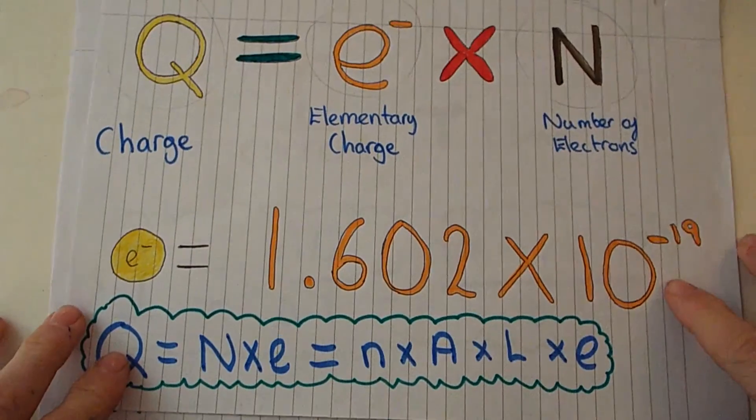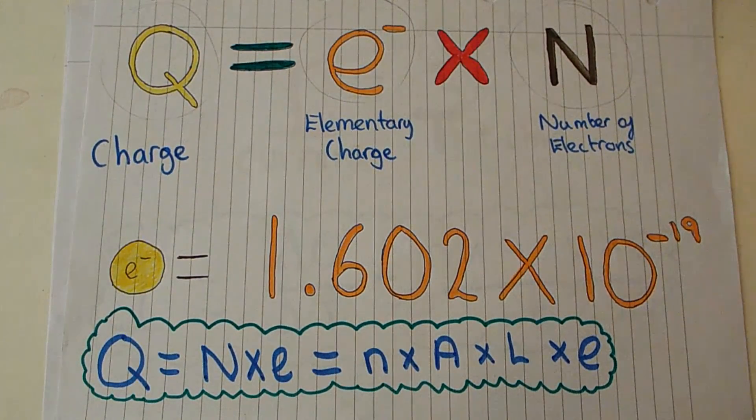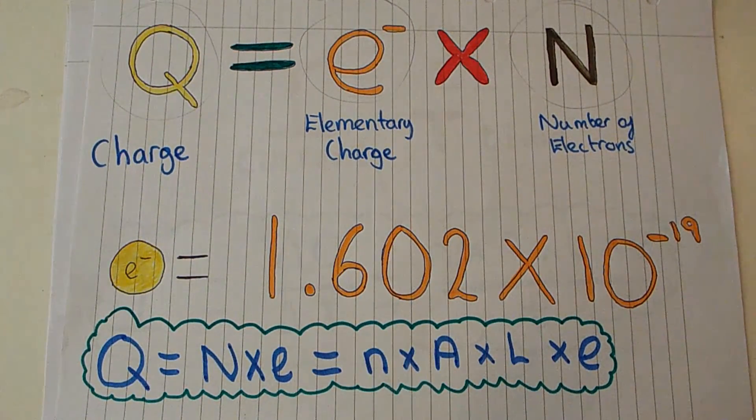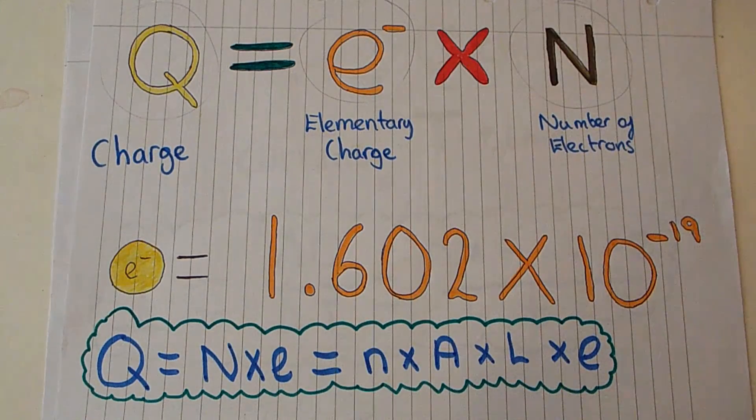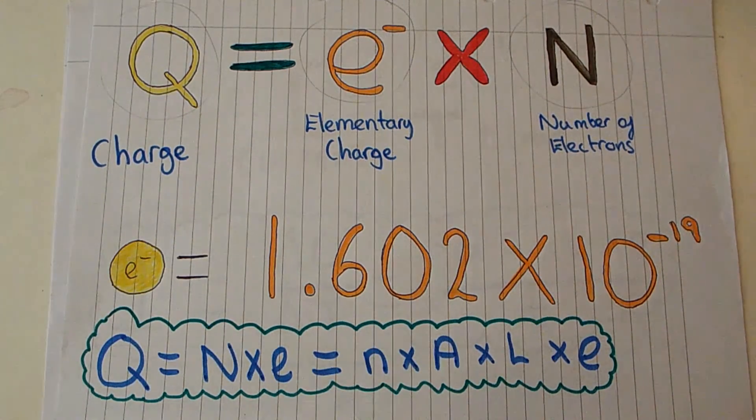Next we want to look at charge, so the total charge that's moving across our cross-sectional area is the elementary charge e, which is the charge of a single electron, times the number of electrons N. This is quite intuitive - the total mass of 10 weights is 10 times their weight, providing they're all identical.